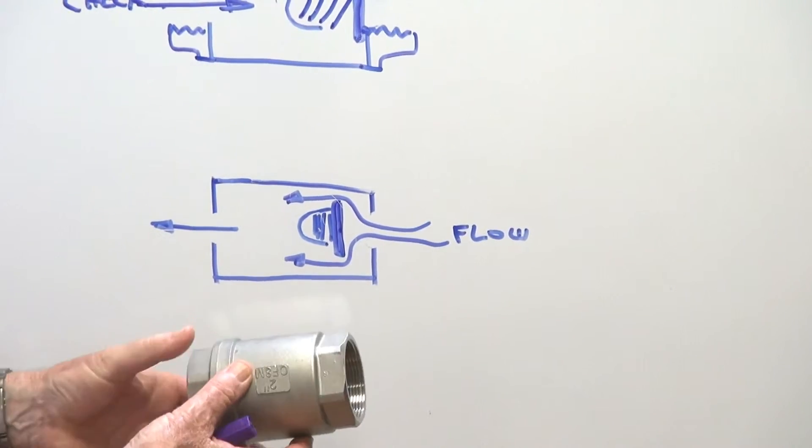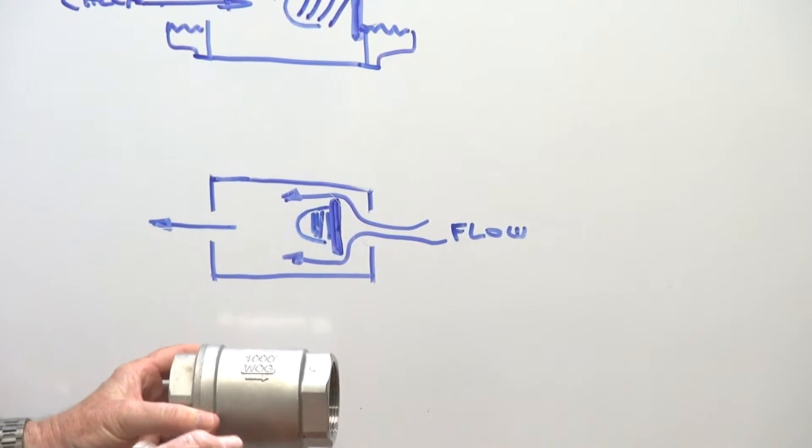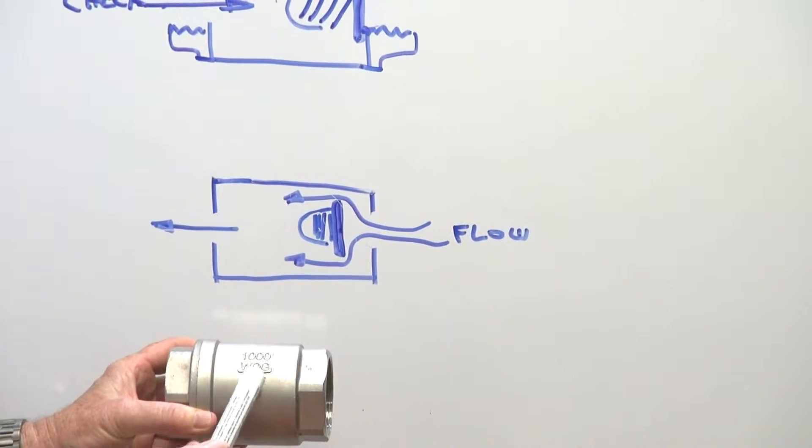1,000 psi working pressure, which is about 54 bar. There's an arrow here showing the direction of flow.